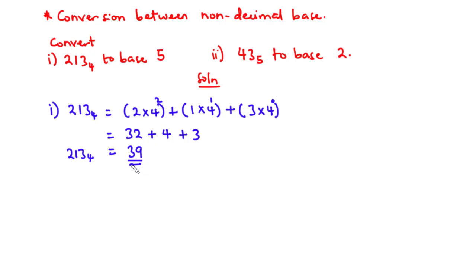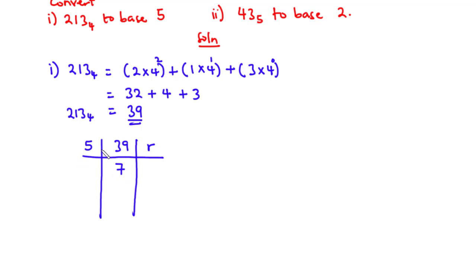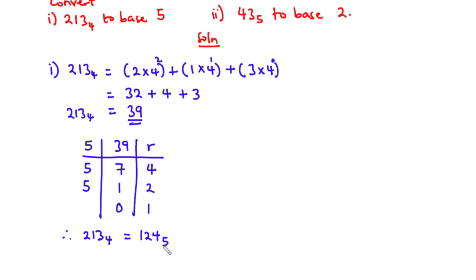Now let's convert 39 base 10 to base 5 using successive division. 5 goes into 39 seven times, remainder 4. 5 goes into 7 once, remainder 2. 5 goes into 1 zero times, remainder 1. Reading remainders from bottom to top: 213 base 4 is equal to 124 base 5.